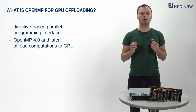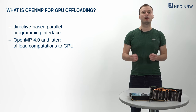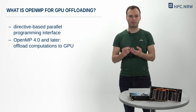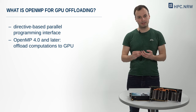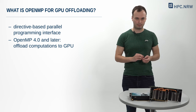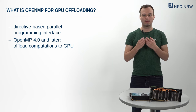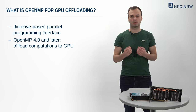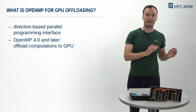What is OpenMP GPU offloading? OpenMP is a directive-based parallel programming interface that supports programming languages like C, C++, and Fortran on many platforms. Starting from version 4.0 of the OpenMP specification, it is supported to offload computations from the CPU to a GPU as a target device.